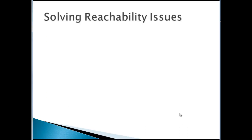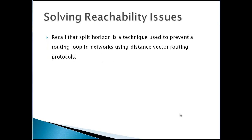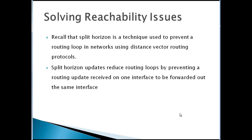Solving reachability issues. Recall that split horizon is a technique used to prevent routing loops in a network using distance vector routing protocols. The split horizon rule reduces routing loops by preventing a routing update received on one interface from being forwarded out of the same interface — it sends updates out every other interface, but not back where it came from.